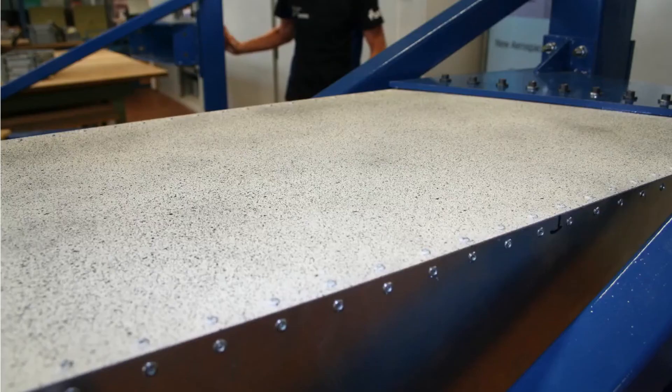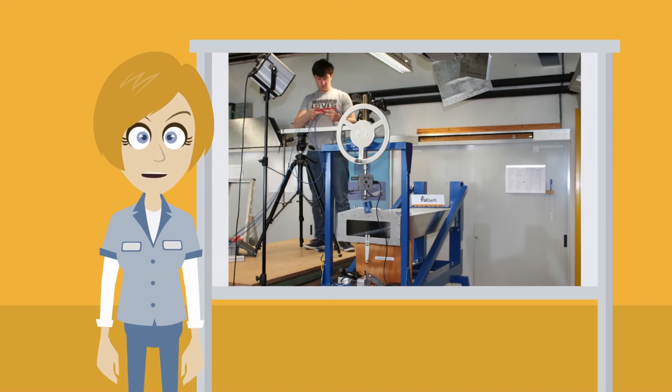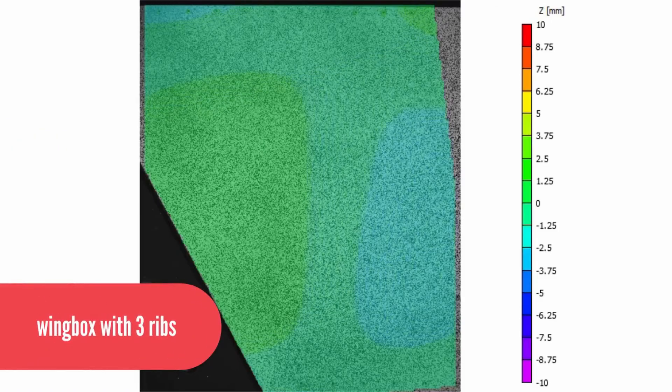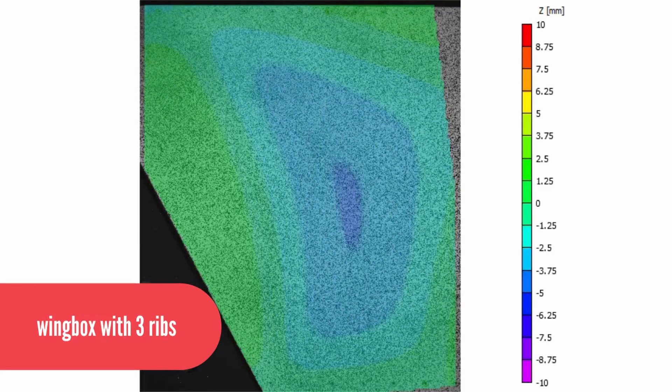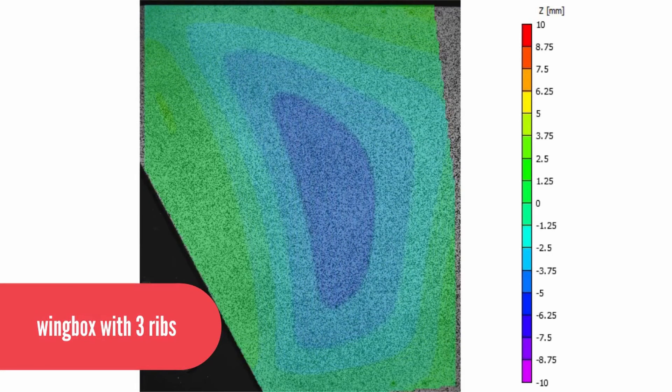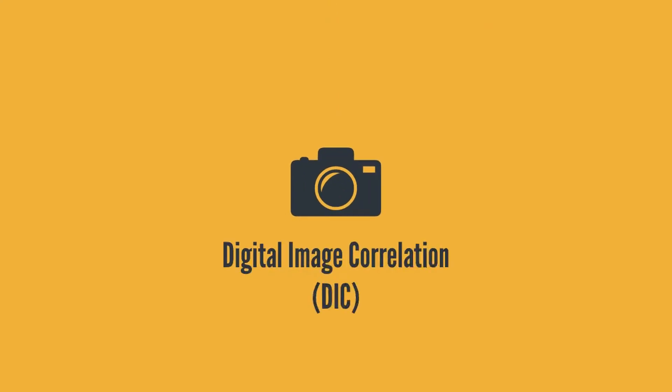Before testing, we spray painted a random speckle pattern on top of each wing box where it was clamped. During the tests, two cameras positioned above the setup took pictures at short intervals. Afterwards, specialized software tracks the movement of each speckle from image to image. This is then translated into a heat map showing us where deformation is occurring on the surface of the wing box. This process is called digital image correlation, or DIC for short.